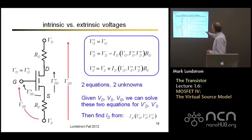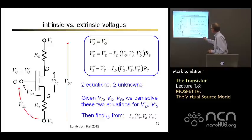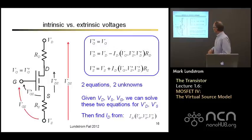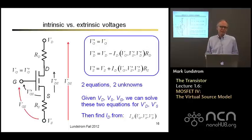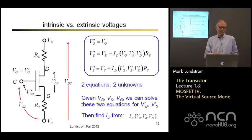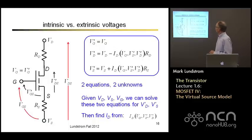This is actually two equations in two unknowns. Given the applied voltages on the actual drain, source, and gate terminals, we can solve these two equations for the two unknowns — the intrinsic voltages across the source and the drain. That requires some nonlinear Newton-Raphson iteration, but it's a relatively straightforward process, so we can do the correction numerically and it's easy to add the effects of these series resistances.